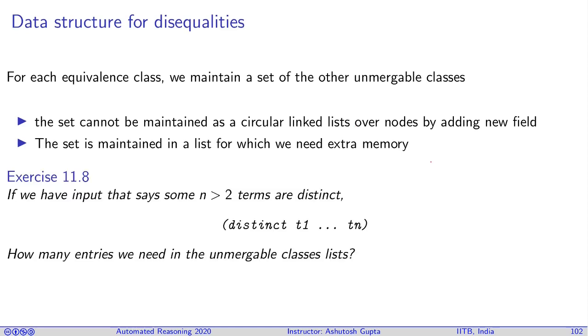For every disequality, it creates two entries: one entry goes into one class and one entry goes to another class. So for n disequalities, you have 2n entries.